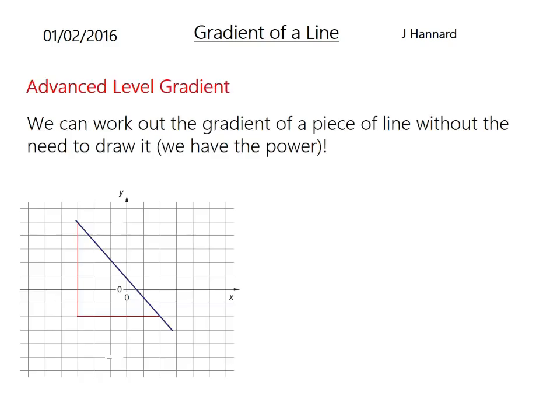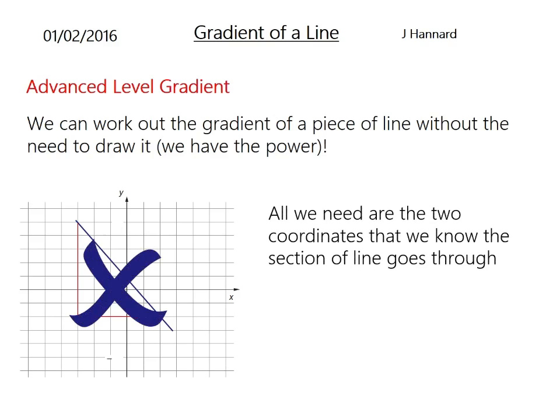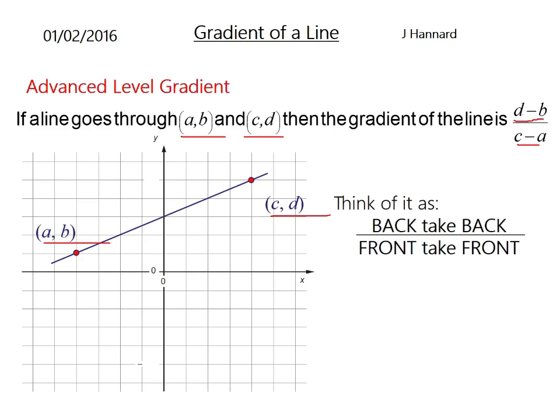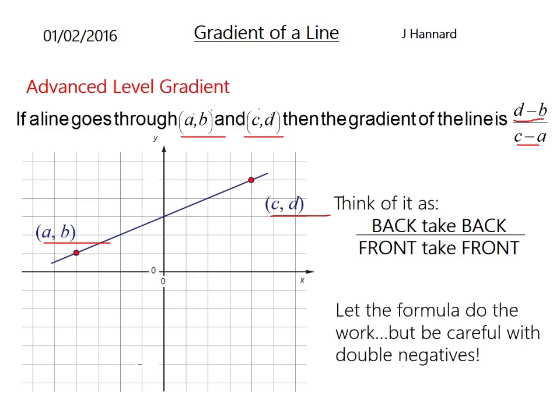Now we're going to get into the real meat of the lesson: advanced level gradient. We can work out the gradient of a line without the need to draw it. All we need are two coordinates that we know the section of the line goes through. If a line goes through coordinates a, b and c, d, then the gradient of the line is d minus b over c minus a. But an easy way to think of this is back take back over front take front. So back take back over front take front. Let the formula do the work, but be very careful of double negatives.